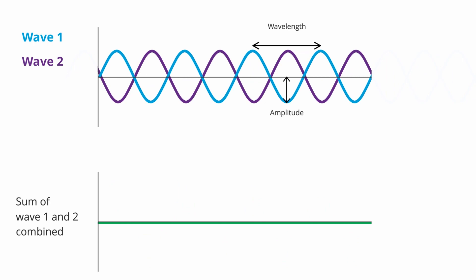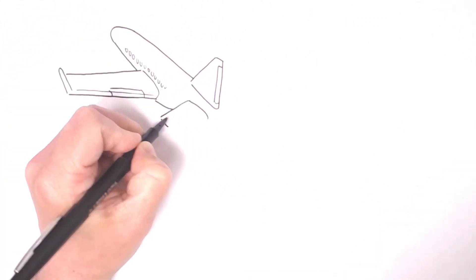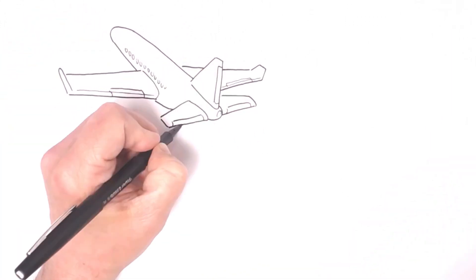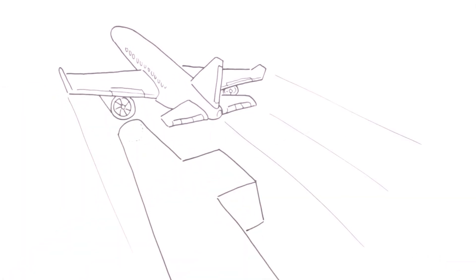Engine noise can be reduced in this way using a device called a quarter wavelength resonator. This is a side branch in a duct whose length is exactly one quarter of the wavelength of the noise we want to cancel.